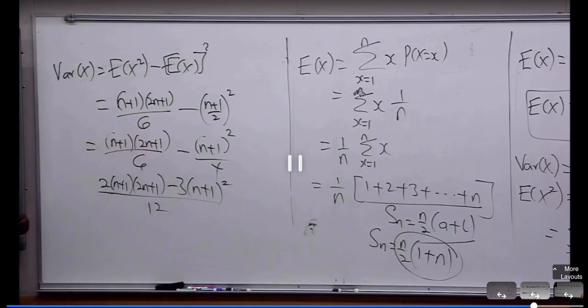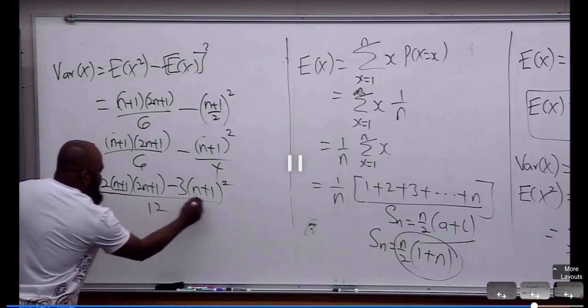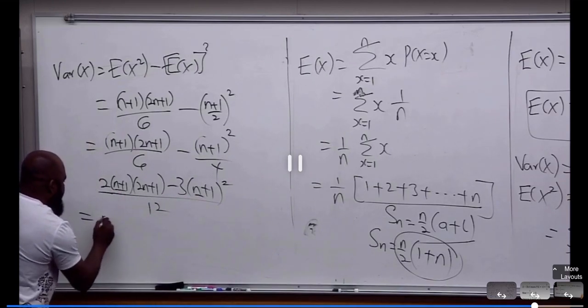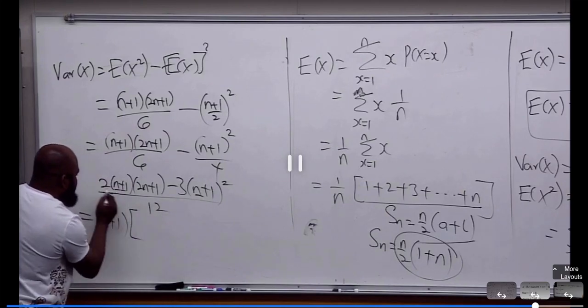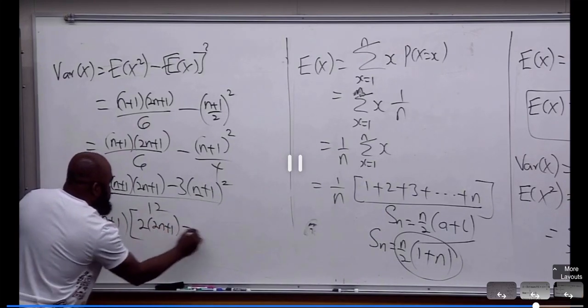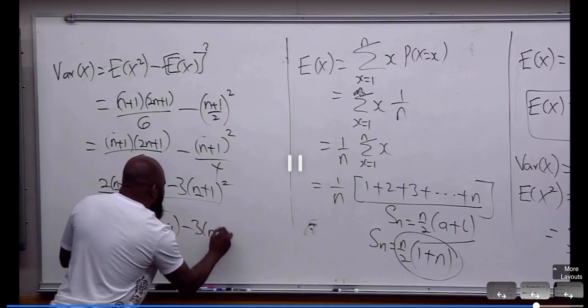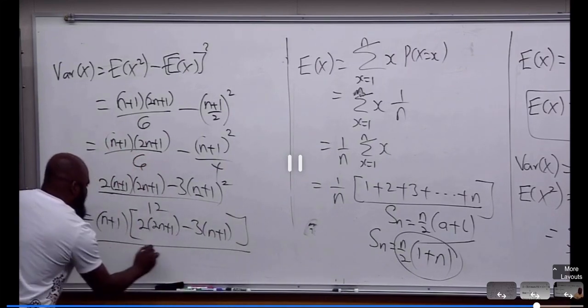You can factor this guy. (N+1) is common. You bring it out. So you're going to have 2 into (2N+1) minus 3 into (N+1) divided by 12.